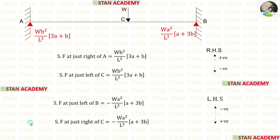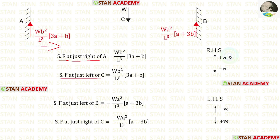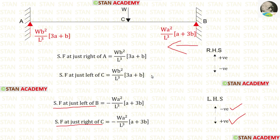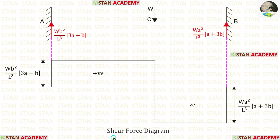Now we are going to draw the shear force diagram. For the shear force just to the right of A and just to the left of C, we calculate from the right side — upwards is positive, downwards is negative. For the shear force just to the left of B and just to the right of C, we calculate from the left side — upwards is negative, downwards is positive. Using these shear force values we construct the shear force diagram.